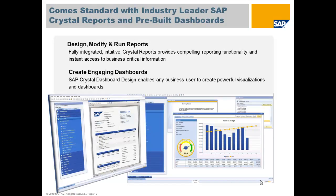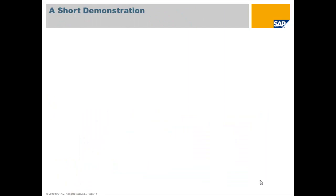One thing that differentiates the SAP Business One Starter Package is the level of interactive information provided. Crystal Reports functionality allows you to design, modify, and run reports. You can also utilize SAP Crystal Dashboard Design — available as an additional purchase — to build powerful visualizations and dashboards. With the core product, we deliver a pre-built set of dashboards, which you can extend using the SAP Crystal Dashboard Design tool or have your business partner customize for you.